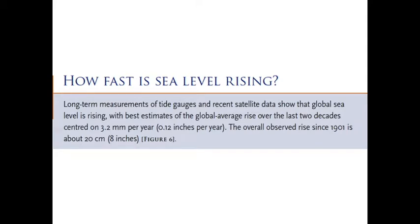How fast is sea level rising? The data shows sea level is rising in many places. The best estimate is 3.2 millimeters per year, with an overall rise since 1901 of about 20 centimeters. Satellite data has been showing that the rate of sea level rise has been faster in the last 20 years compared to the past. There is a lot of uncertainty because we don't have a strong history of sea level data in many regions — we have it in North America and Europe, but not as much in South America or Southern Africa.